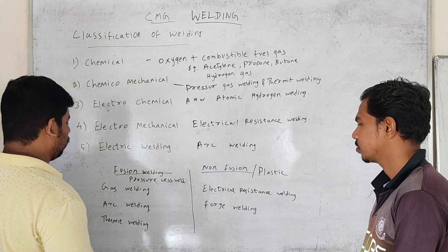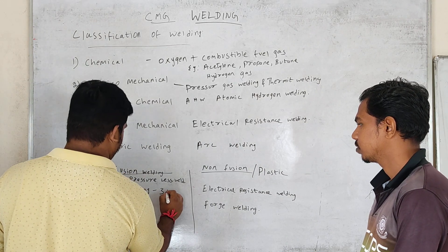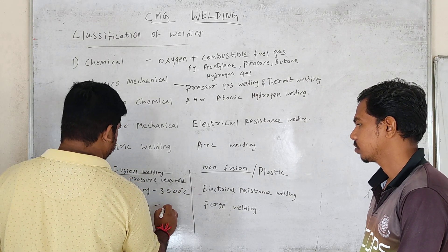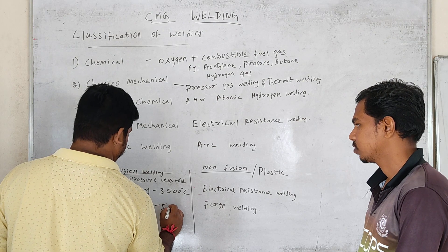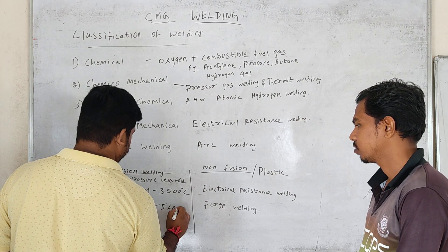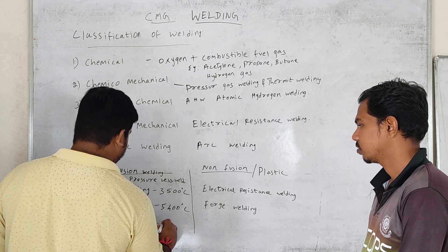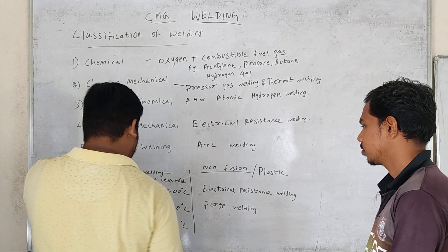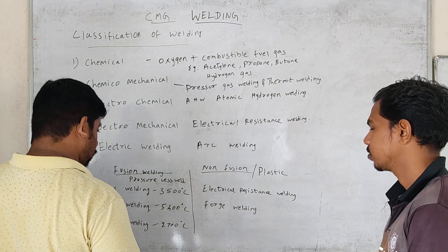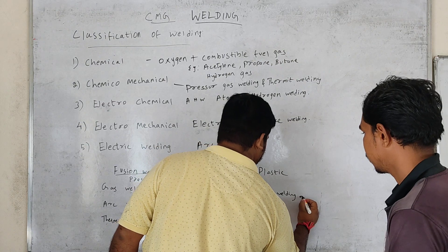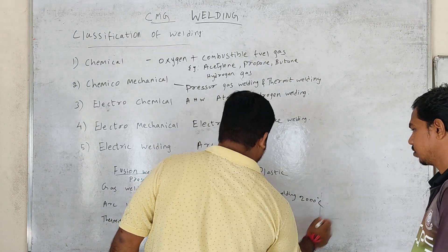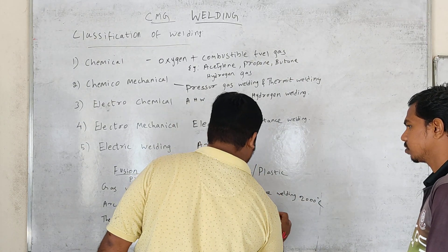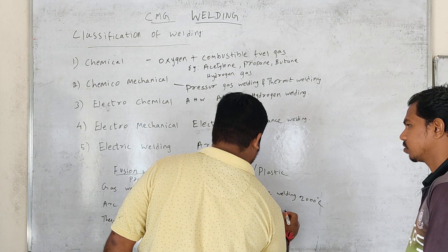Gas welding: 3,500 degrees Celsius. Arc welding: 5,400 degrees Celsius. Thermit welding: 2,700 degrees Celsius. Electrical resistance welding: 2,000 degrees Celsius. Forge welding: 1,350 degrees Celsius.